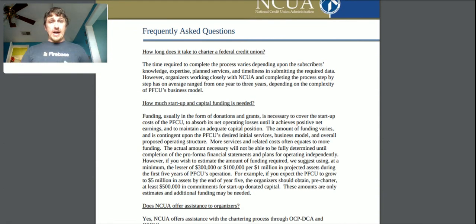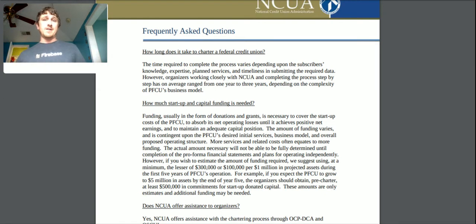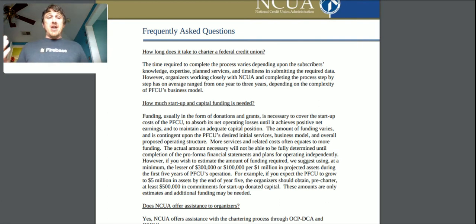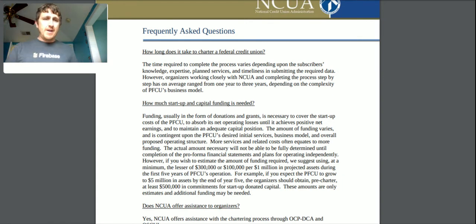One frequently asked question is: how long does it take to charter a federal credit union? The time required varies depending on the subscribers' knowledge, expertise, plan services, and timeliness in submitting the required data. However, organizers working closely with the NCUA and completing the process step by step have an average range of one to three years depending on the complexity of their business model. If we can have a low-complexity model we could potentially do this in a year.